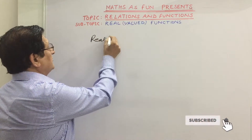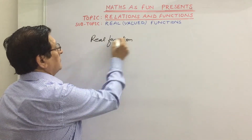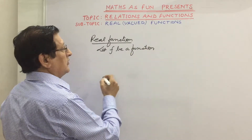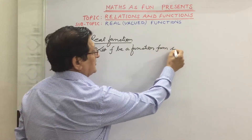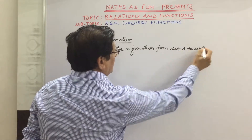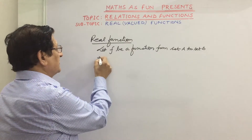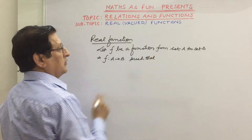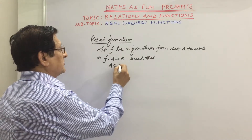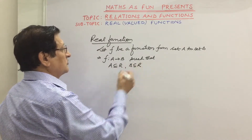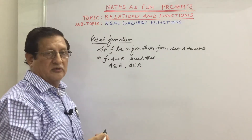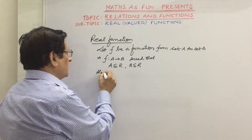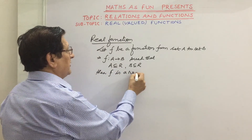When we define a real function, we say let f be a function from set A to set B, where set A and B are any two non-empty sets. We write this as f from A to B. If A is a subset of R and B is also a subset of R, it means the domain and co-domain of the function are both subsets of the set of real numbers, then f is a real function.